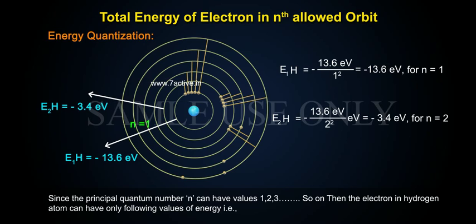E2H equals to minus 13.6 electron volt by 2 square electron volts equals to minus 3.4 electron volts for N equals to 2 and so on.